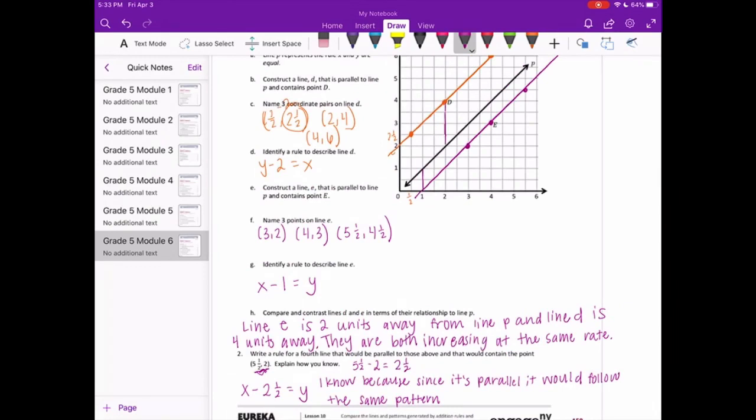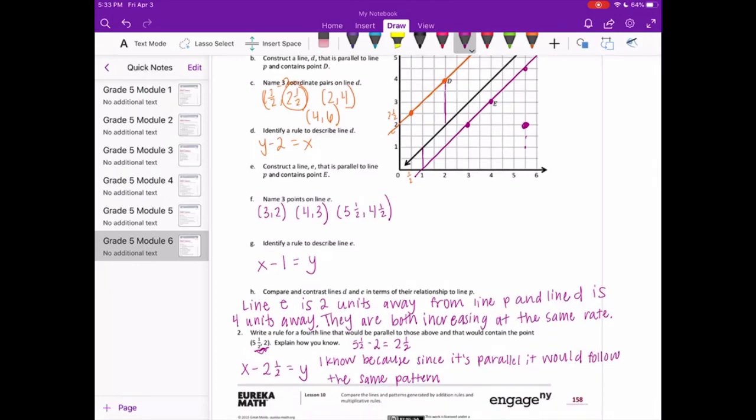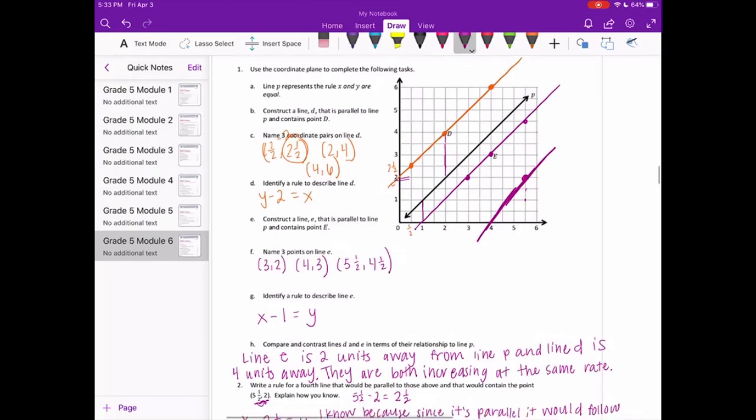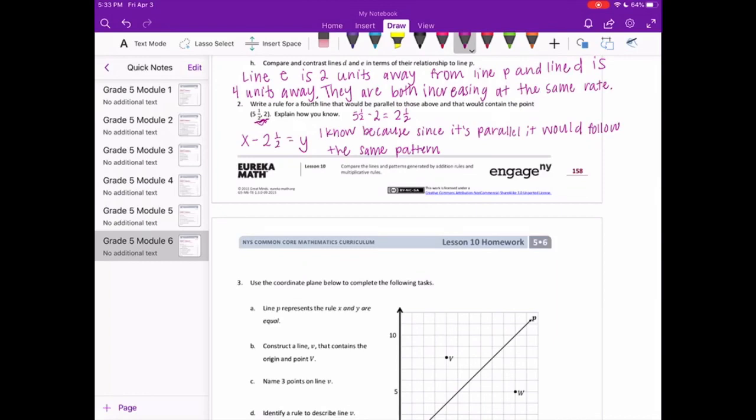So I know because since it's parallel, it would follow the same pattern. And let's see where that would be. So 5 and a half, 2, that's right there. Except it's having smaller Y values. So the Y is 2, so this line is going to be something like that through there. So it's going to have larger X values and smaller Y values, but it will have smaller Y values.